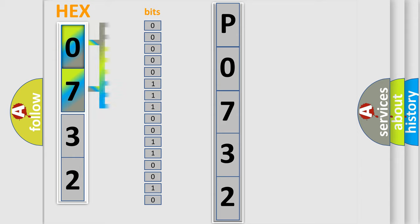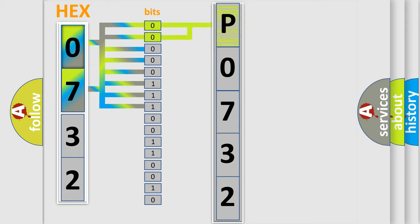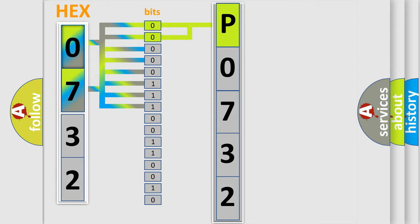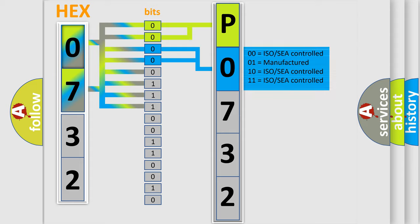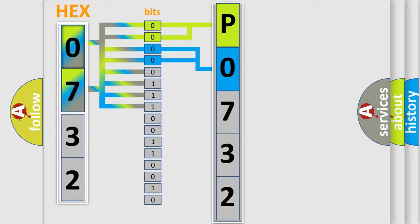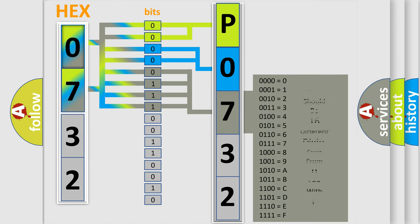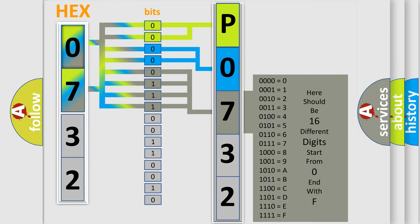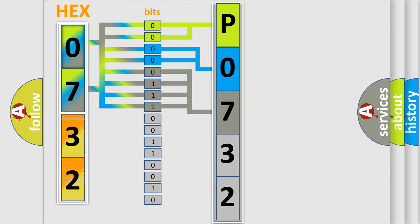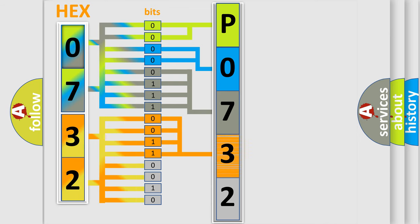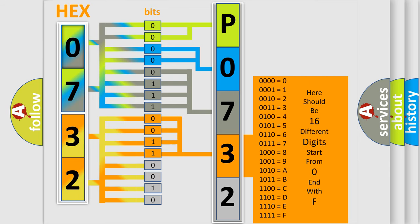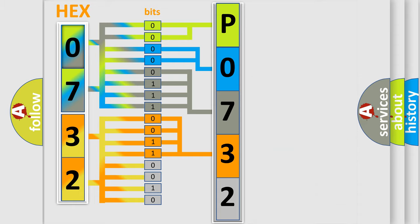One bit is the basic unit that each computer works with. The bit has two logical states: zero, low level, and one, high level. By combining the first two bits, the basic character of the error code is expressed. The next two bits determine the second character. The last bits of the first byte define the third character of the code. The second byte is composed of a combination of eight bits — the first four bits determine the fourth character, and the last four bits define the fifth character.